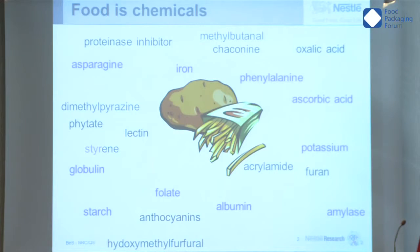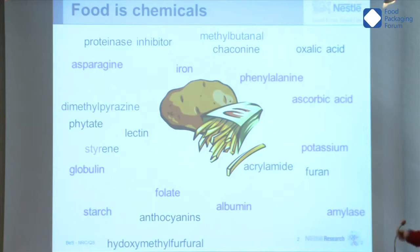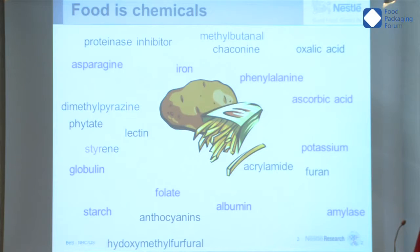We actually cook potatoes or process them. But if you process them — for instance, if you do french fries — you will have the production of new chemicals. And some of these chemicals, I will take an example up there, the methylbutanol — you will see that it's a flavor, it's why we like french fries. But there are some others which are much less nice to hear about, like acrylamide, which is a Maillard reaction product.